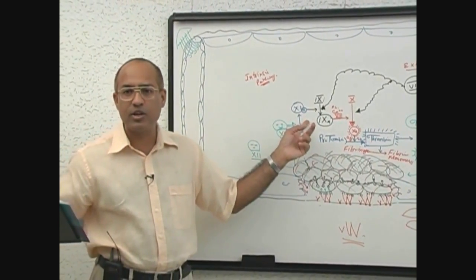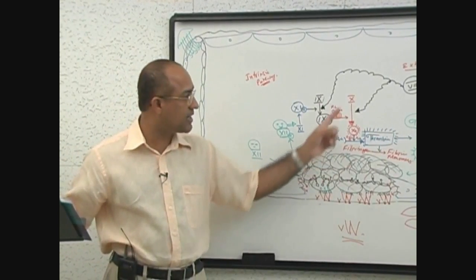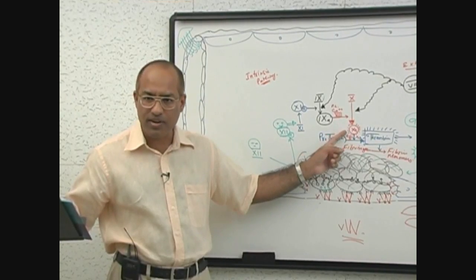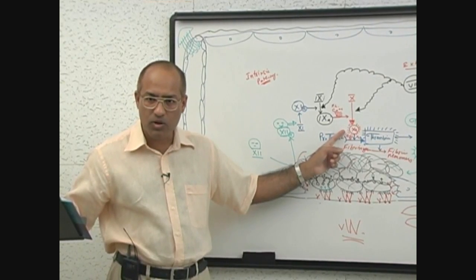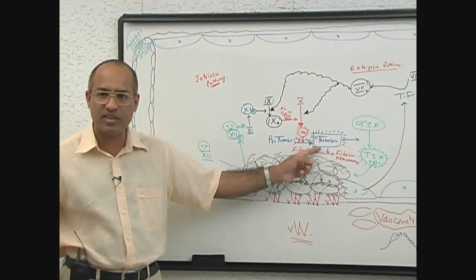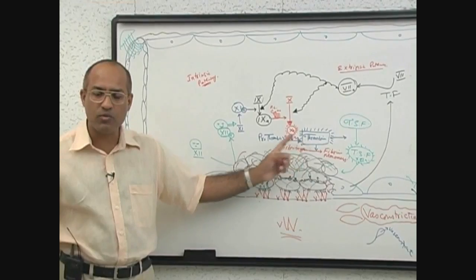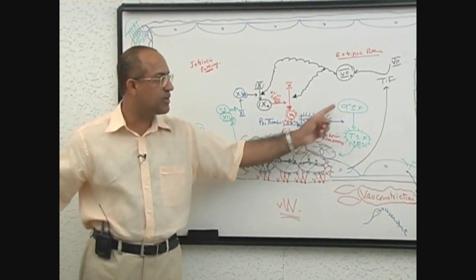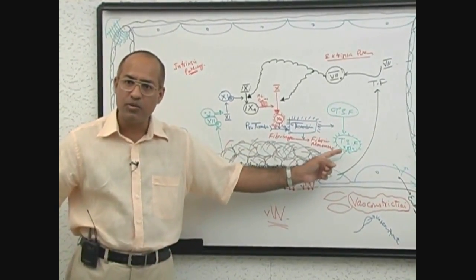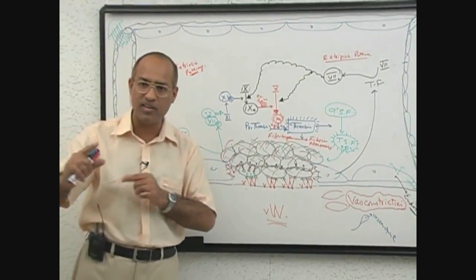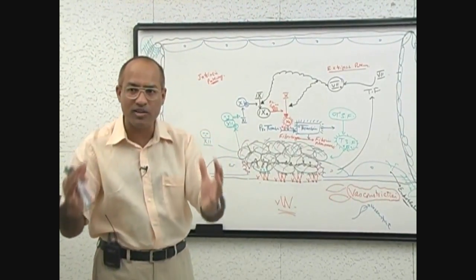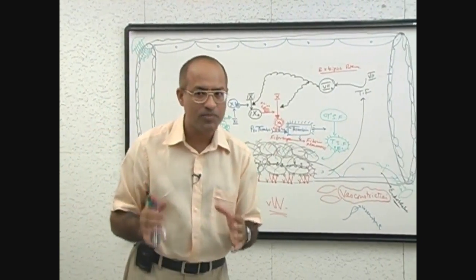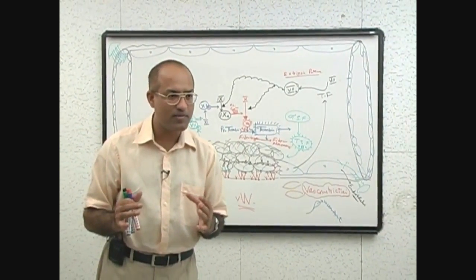This will lead to activation of factor 10, and factor 10 in the presence of phospholipids, calcium and factor 5 will convert prothrombin into thrombin. Thrombin is the real master: number 1, it will convert fibrinogen into fibrin monomers, and number 2, thrombin will activate factor 13 which will crosslink these monomers and produce a meshwork of fibrin within and on the surface of this platelet plug. Now this platelet plug is converted into secondary platelet plug.